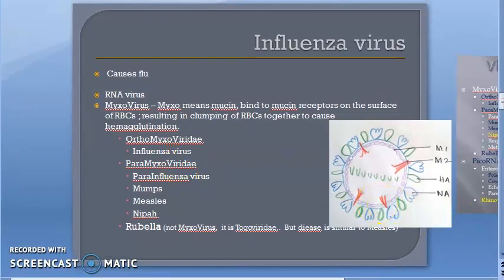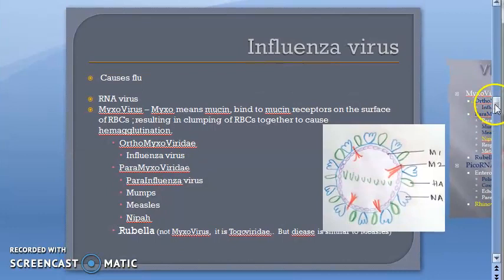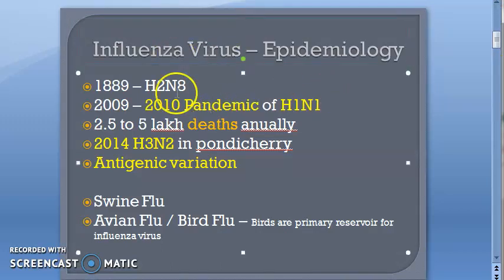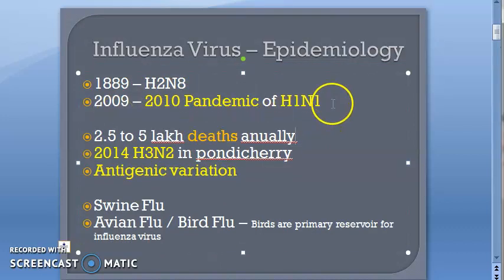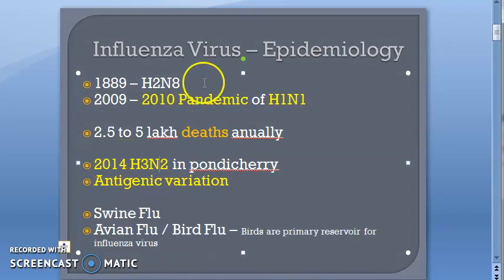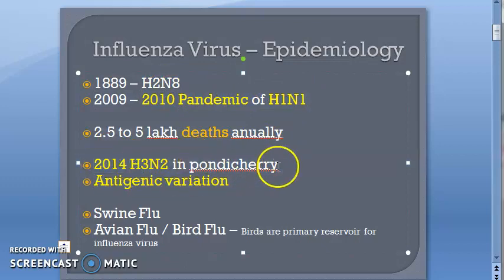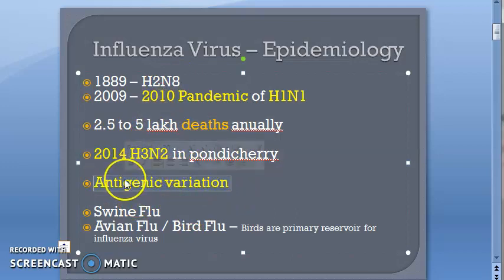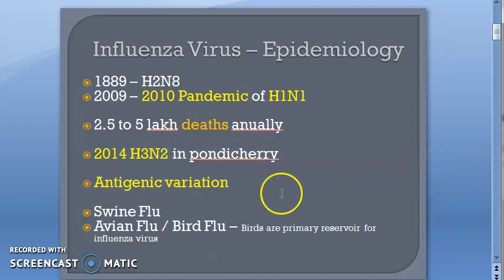In this video we look at influenza virus morphology. In the last video we saw an introduction to influenza — the disease has huge epidemiology, it is a pandemic, and annually there are lakhs of deaths globally. In 2010 there was a pandemic of H1N1 and in 2014 H3N2. This H1N1, H3N2 classification is because of antigenic variation — the influenza virus is able to come up with different types of influenza.